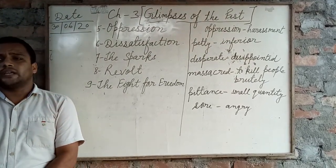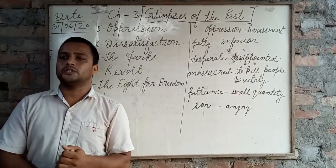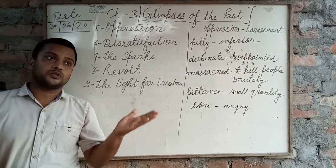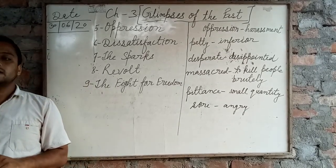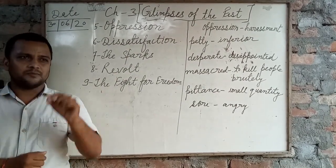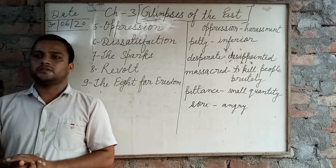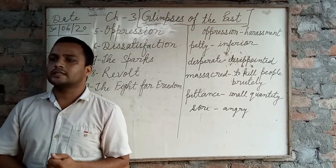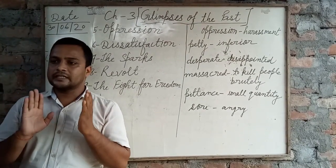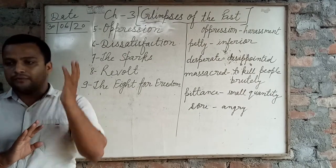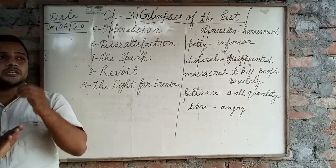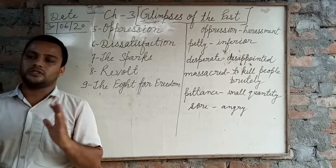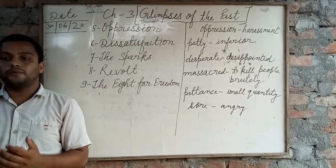This dissatisfaction was growing in the army of the East India Company also. British soldiers got good and high salaries, large houses to live in, and servants, while Indian soldiers got very low salaries, small pay, and slow promotions. The common people along with Indian soldiers revolted against the British because they believed the British were misleading Indians by forcing them to cross the sea, which was against their age-old customs.